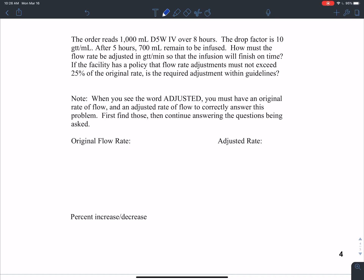The drop factor is 10 drops per minute. After 5 hours, 700 milliliters remain to be infused. How must the flow rate be adjusted in drops per minute so that the infusion will finish on time? If the facility has a policy that flow rate adjustments must not exceed 25% of the original rate, is the required adjustment within the guidelines?